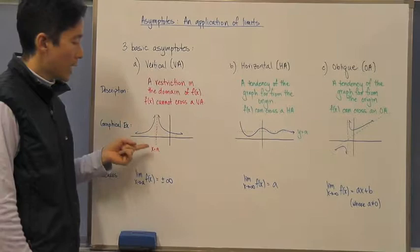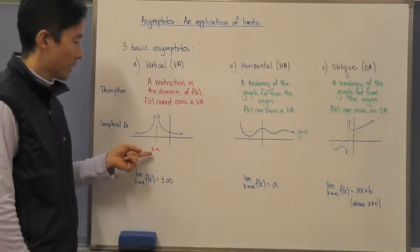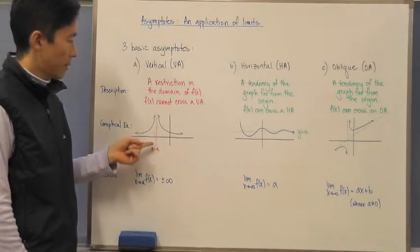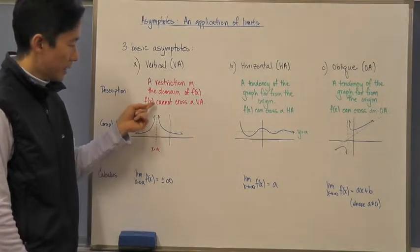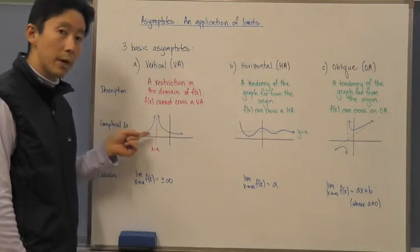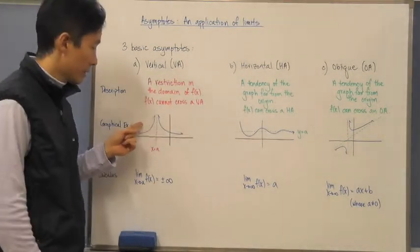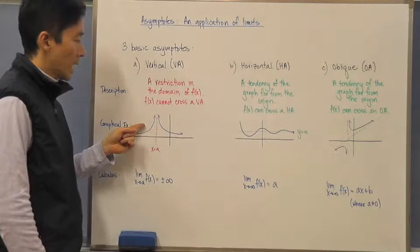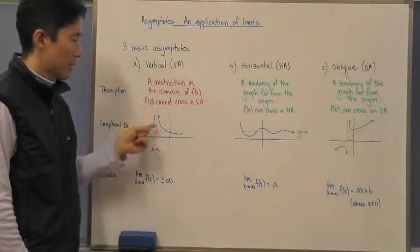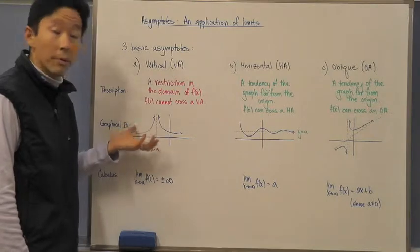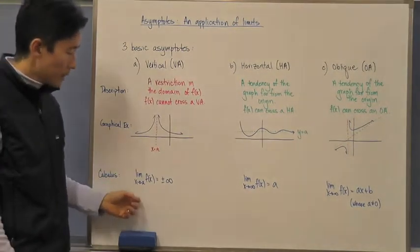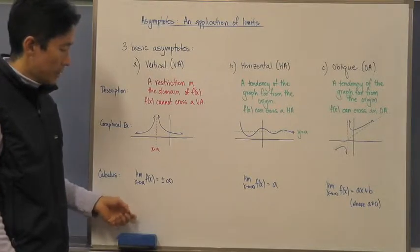If I substitute a into my function f of x and come up with something undefined, notice that I have a dotted line going vertically up and down — shown in red to indicate that the function will never cross it. As x approaches this value, the function shoots up to positive or negative infinity, or both.